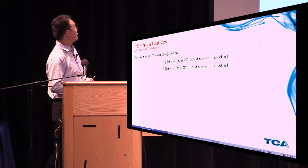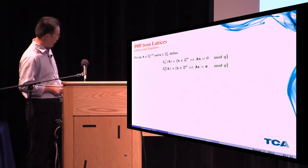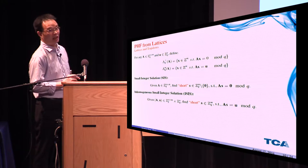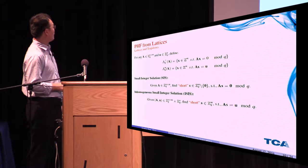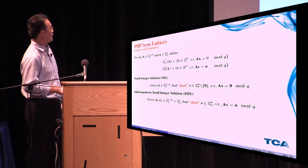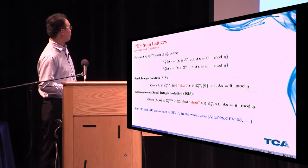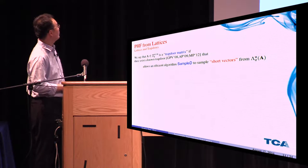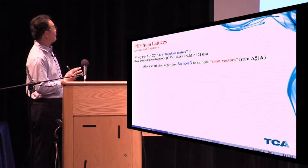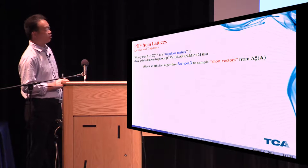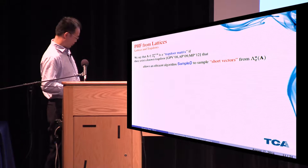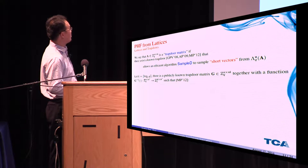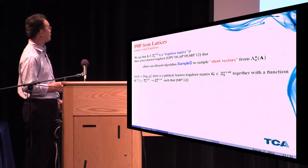Now we move to the next part. As we know, for matrix A and vector U, we can define two lattices. And there's the SIS problem called the small integer solution problem, so that given matrix A, find a short non-zero vector S such that AS equals zero modulo Q. And the inhomogeneous SIS problem is that given A and U, find a short S such that AS equals U modulo Q. Both problems are as hard as the SIVP problem in the worst case as shown by Ajtai, Gentry, and others. And we say a matrix A is a trapdoor matrix if there exists a known trapdoor that allows an efficient algorithm to sample short vectors from this lattice. In the paper we use the MP trapdoor, which for K equals log Q, there is a publicly known trapdoor matrix G.